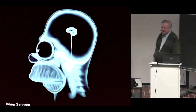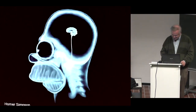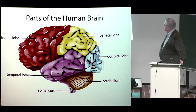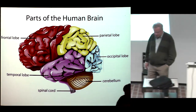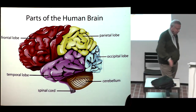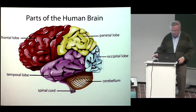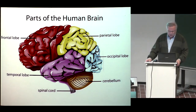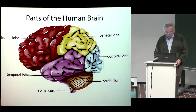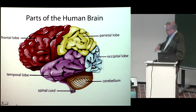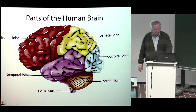Starting with the X-ray image of the brain. The main parts of the human brain are the lobes: frontal lobe, parietal lobe, occipital lobe, temporal lobe, and then cerebellum and spinal cord. I will tell more about their function in a moment.